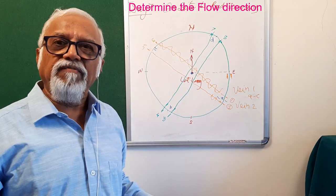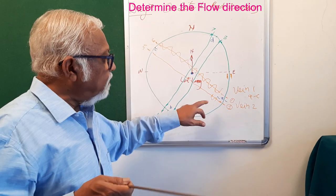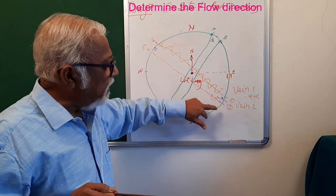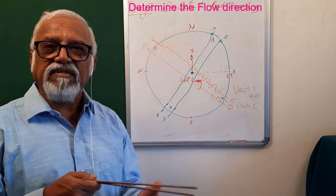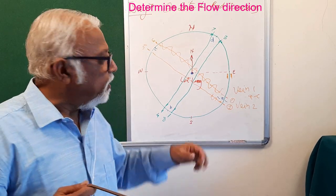Now we go on with the second program which we have done. What we have to do is once we have identified those particular veins, the next exercise is to find out the flow direction.